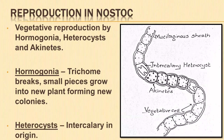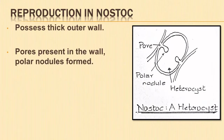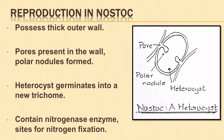The heterocysts are intercalary in origin and occur at intervals. They possess a very thick outer wall. Each heterocyst is connected with a vegetative cell on both sides through prominent pores in the wall. Later, a polar nodule is formed. The heterocyst germinates to form a new trichome which is finally liberated. Heterocysts contain nitrogenase enzyme and are the sites for nitrogen fixation.